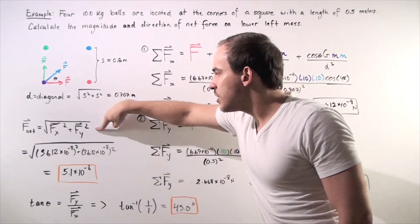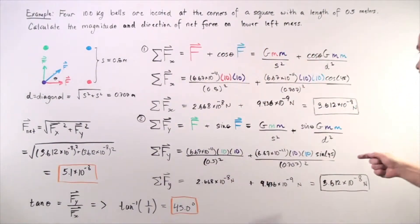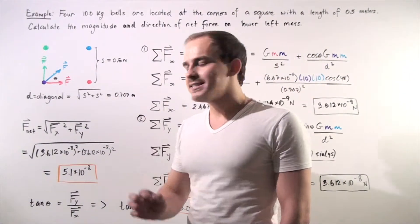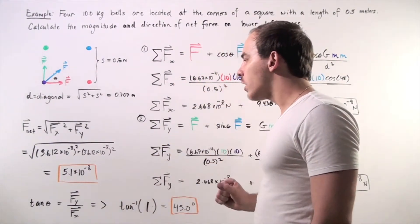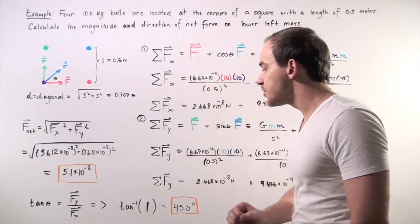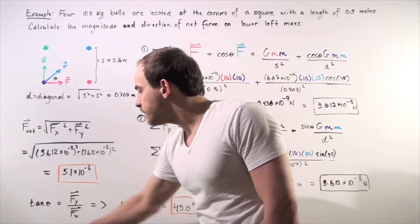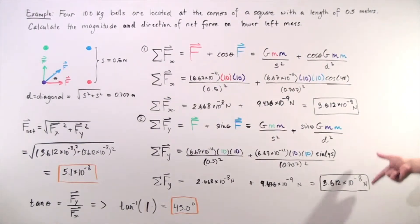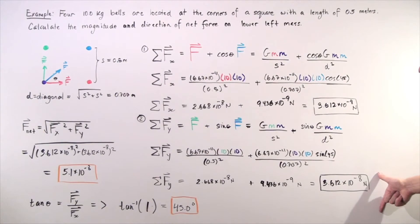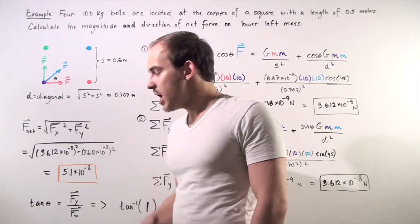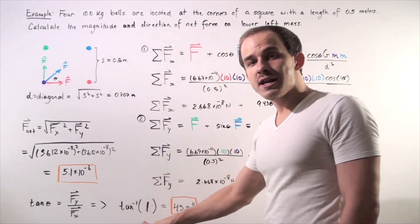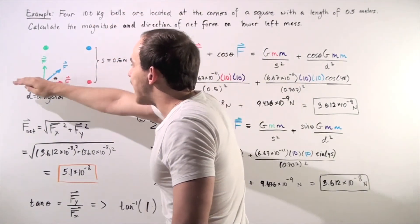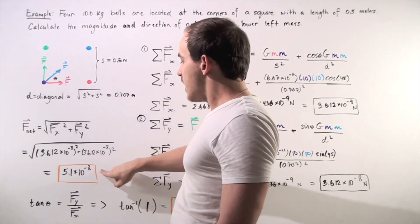To find the net force, we take the squares of each component, add them up, and take the square root of the sum, giving approximately 5.1 times 10 to the negative 8 newtons. For the direction, we take the inverse tangent of the ratio of the y-component to the x-component. Since both components are exactly equal, we take tan inverse of 1, which gives us 45 degrees. So the net force has a magnitude of 5.1 times 10 to the negative 8 newtons, directed at 45 degrees with respect to the x-axis.